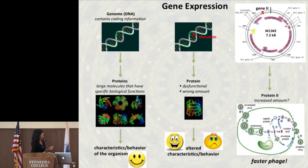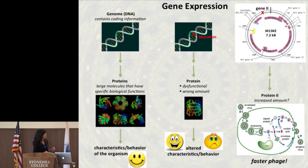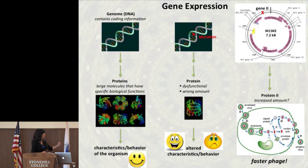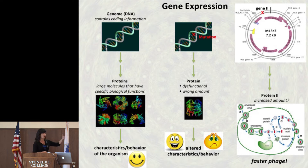We're working with this bacteriophage, and it has a genome much smaller than ours — we know everything about it, it's very simple. We know that some mutations near gene 2 cause changes in the amount of a protein called protein 2 made by the bacteriophage. And what we know is that the phage end up faster — faster at making copies of itself.